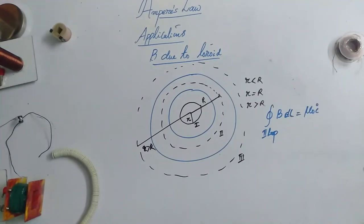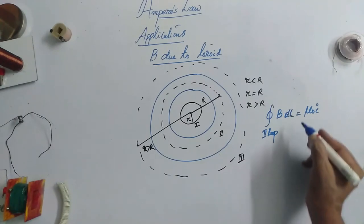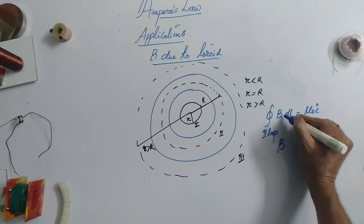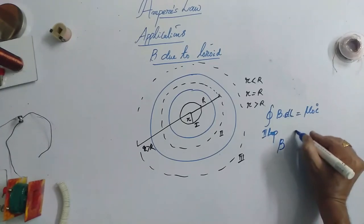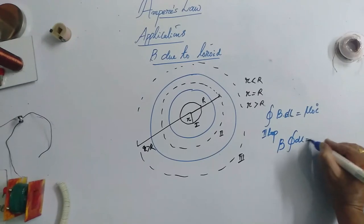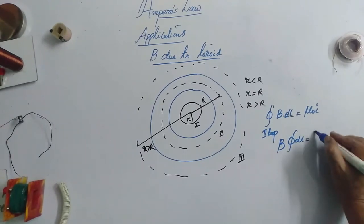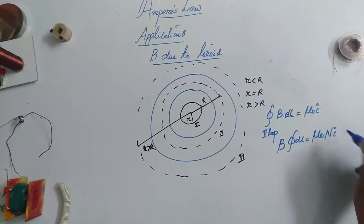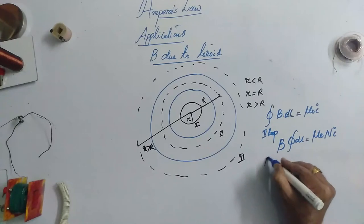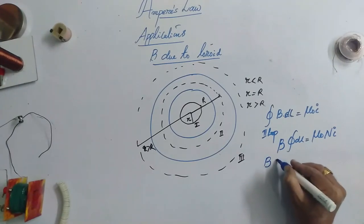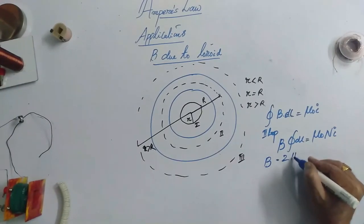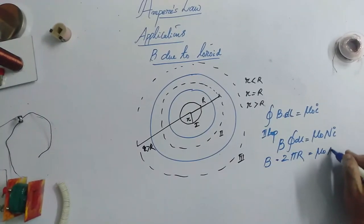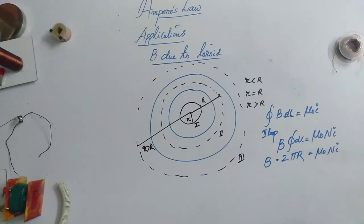That is, i current we have allowed through this solenoid. Therefore, B and dl are in the same direction. Therefore, we can write B integral over dl is equal to this i again caused by n number of turns. Therefore, mu naught n i. Therefore, B times integral over dl can be written as 2 pi r, mu naught n times i.